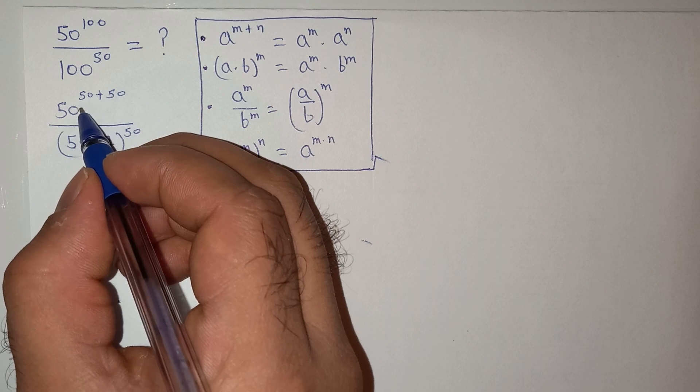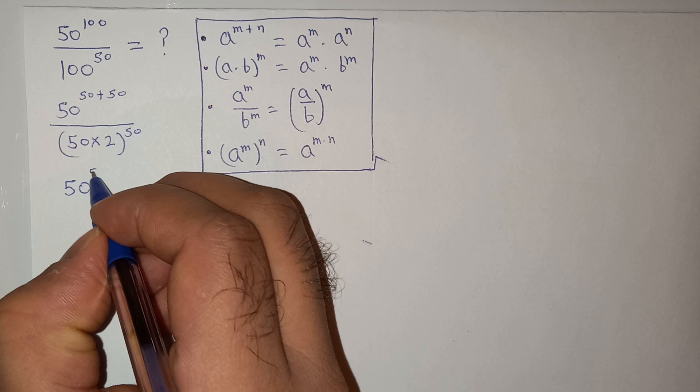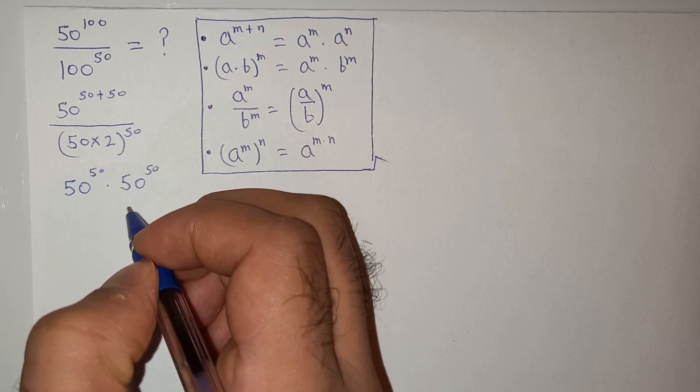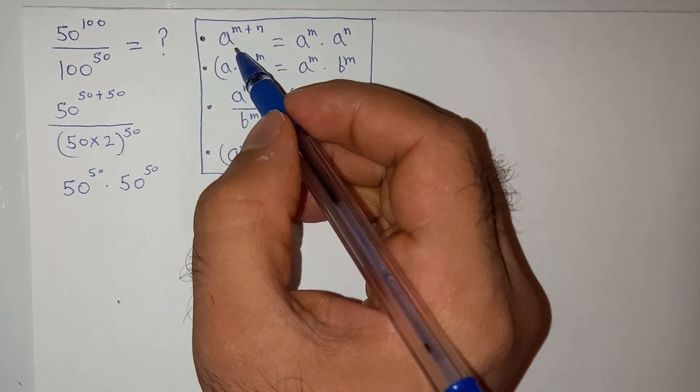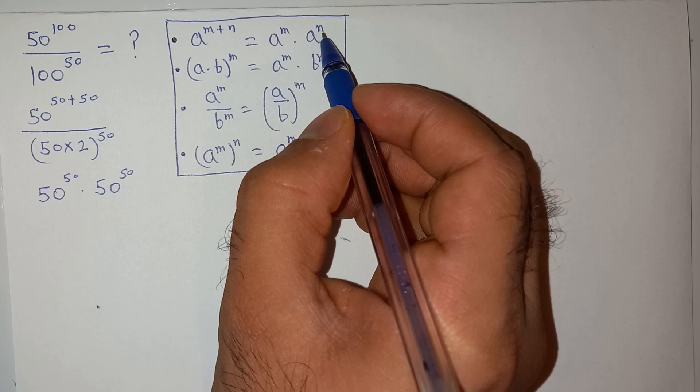Now we can write this expression as 50 power 50 multiplied by 50 power 50. As you know the formula a power m plus n equals a power m multiplied by a power n, so I have used this rule.